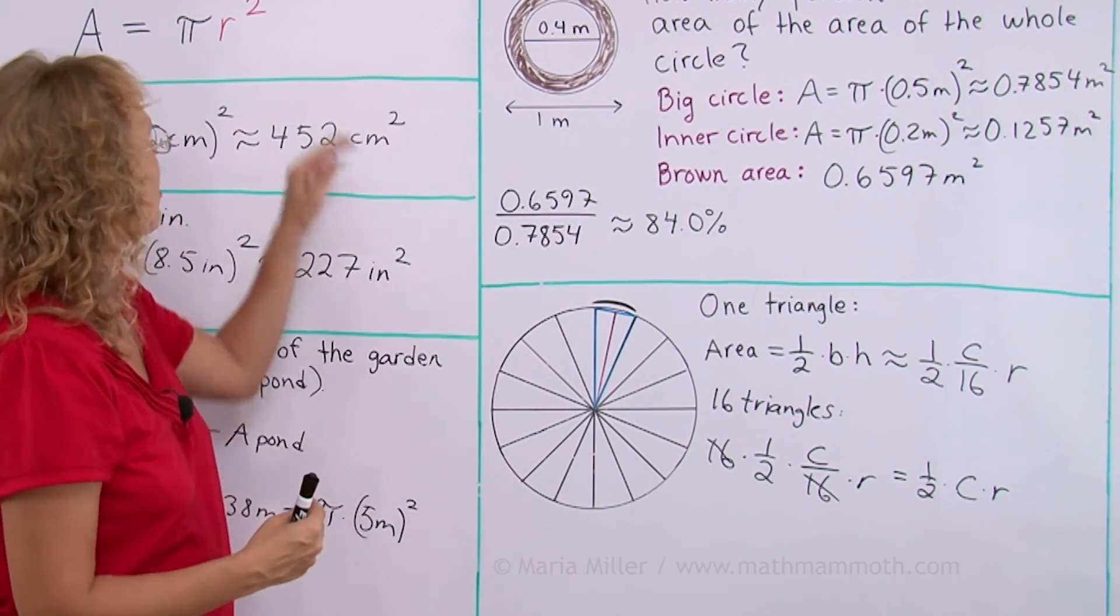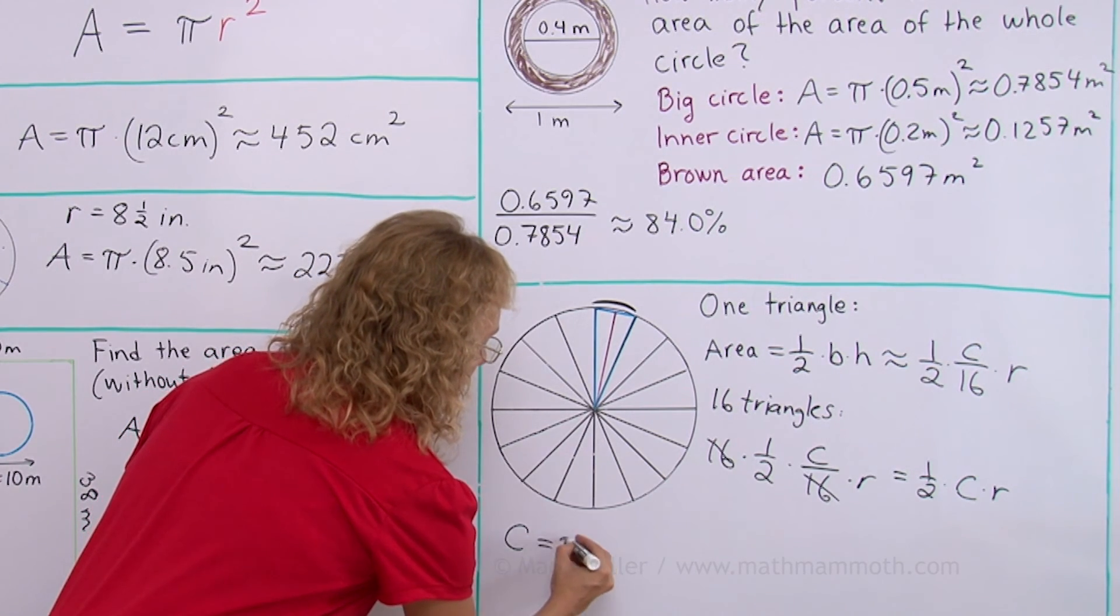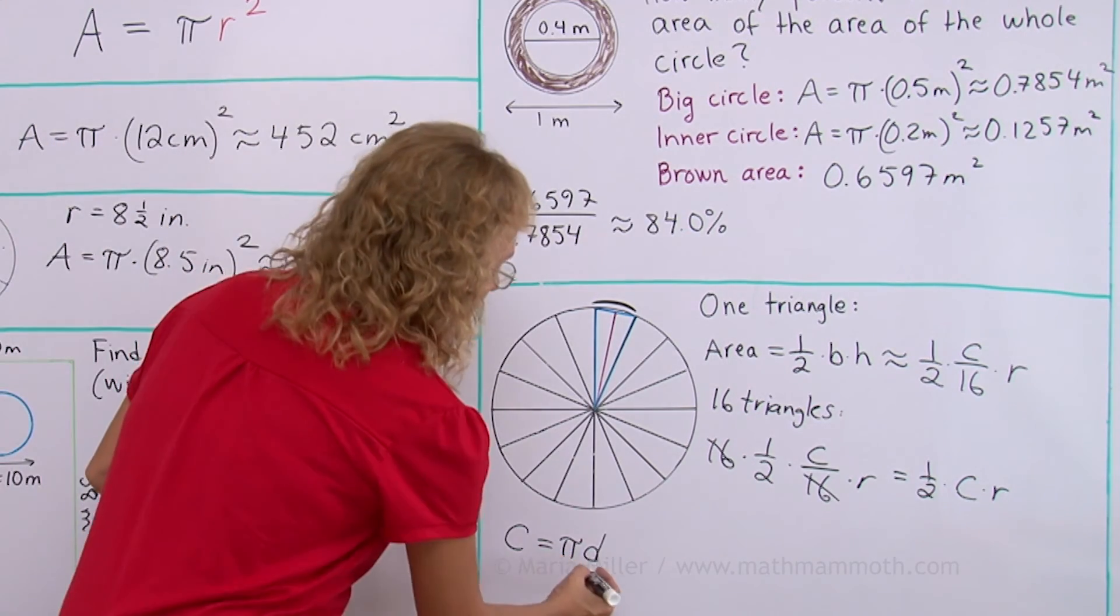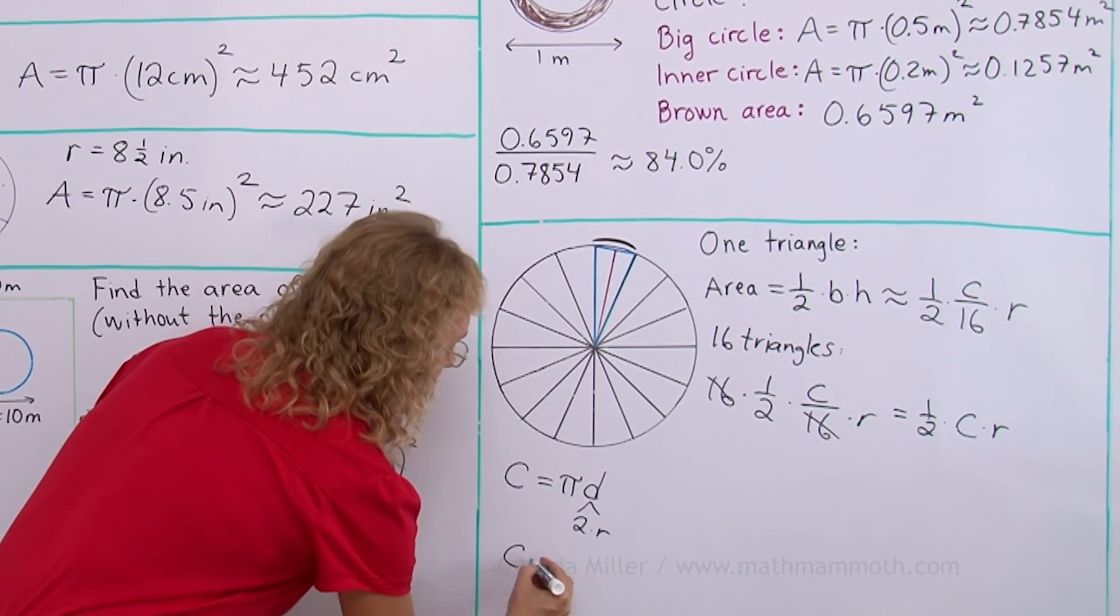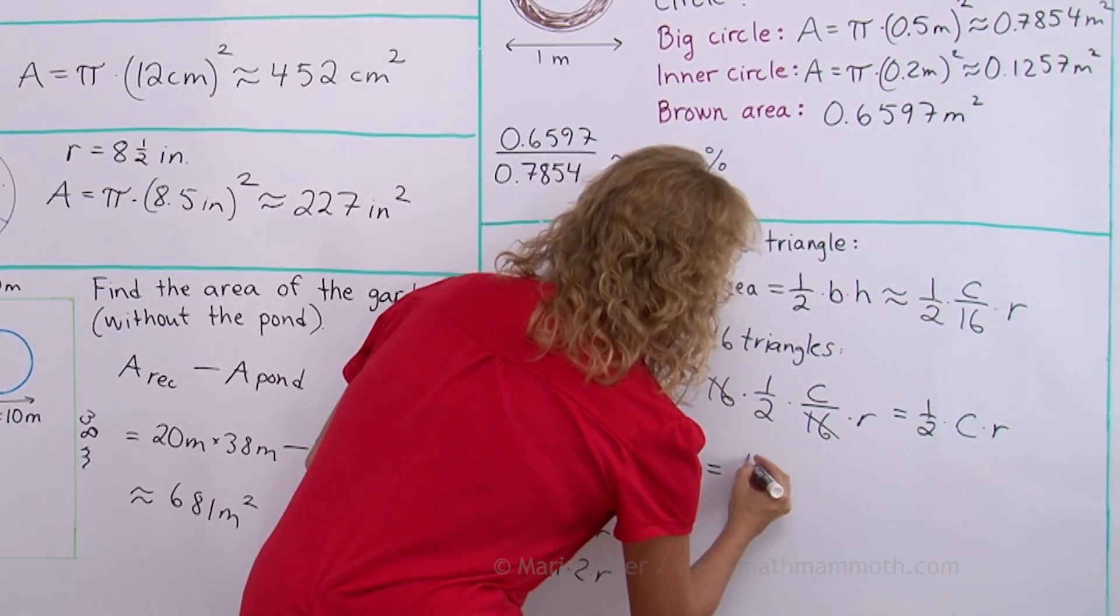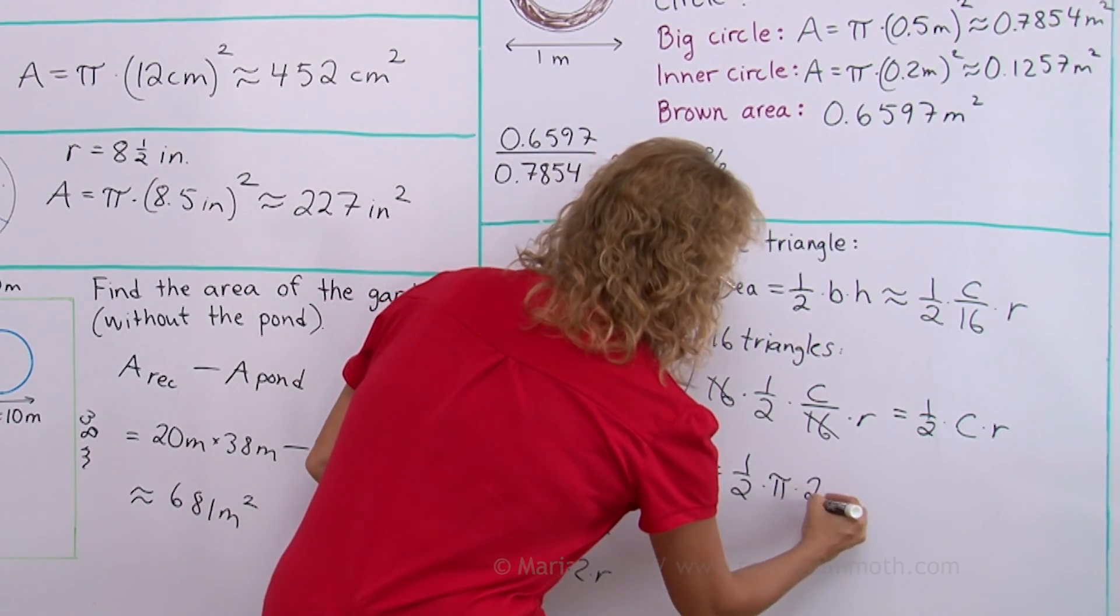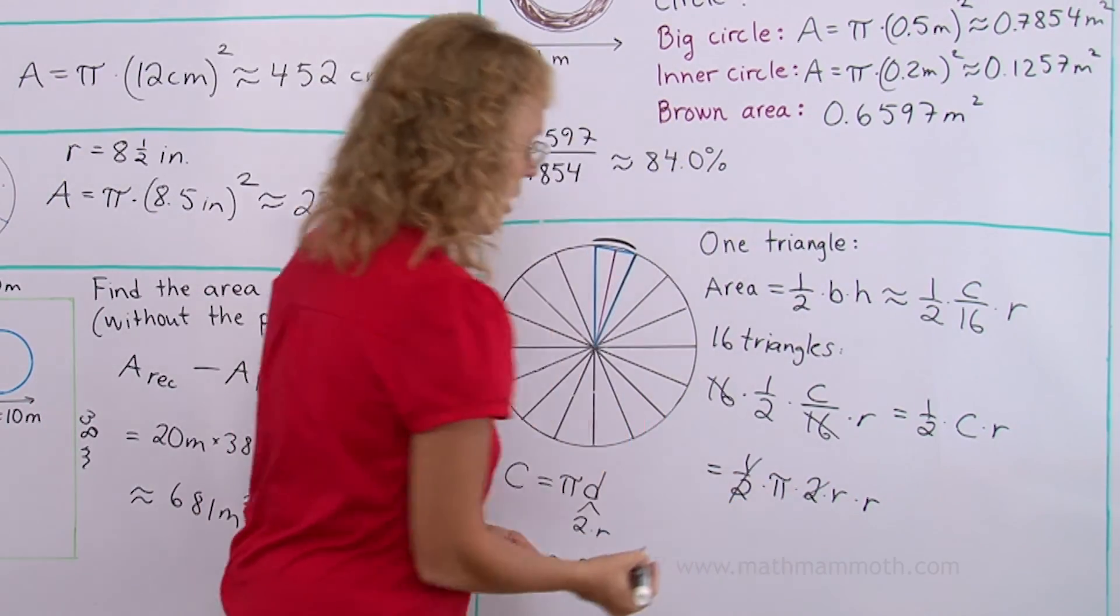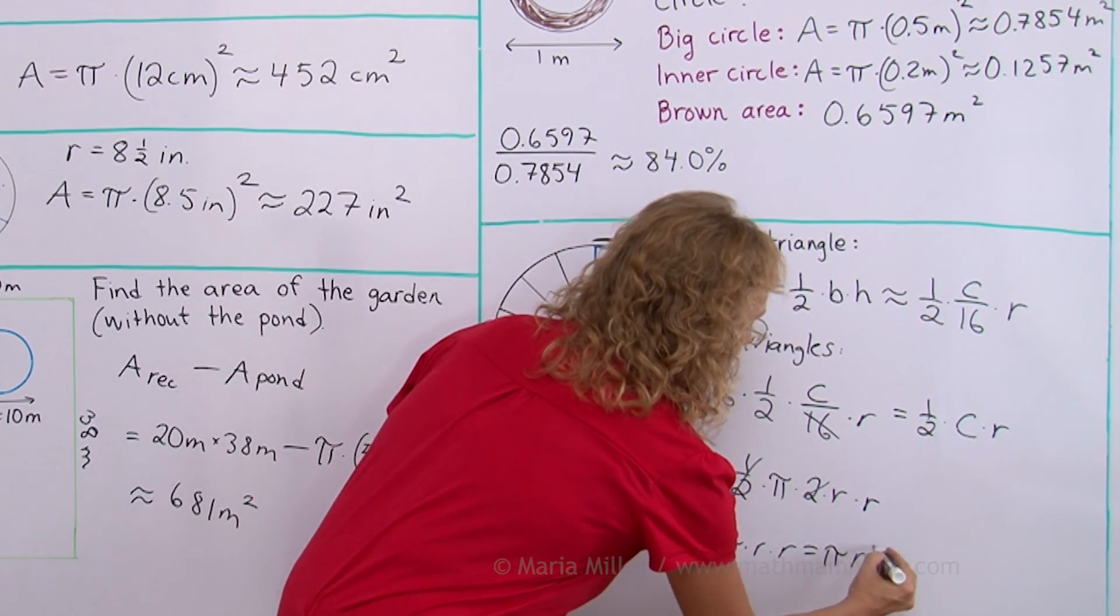And now we will see how it turns into this. We are going to use that the circumference is also equal to pi times diameter. That's how the pi gets in there now. And diameter itself is 2 times radius, right? So circumference is actually pi times 2 times r. So I'm going to put that there now. And we will get half times, in place of circumference, I put this. Pi times 2 times r times that r. And now we are almost there because the 2 and the half cancel out. And so we are left with pi times r times r. Pi times r squared.